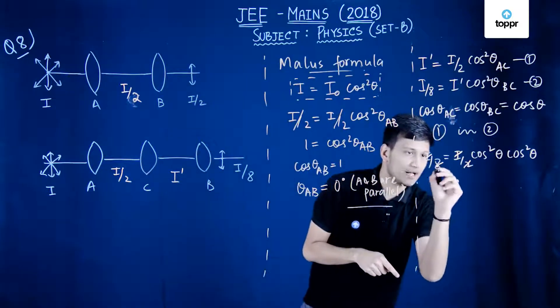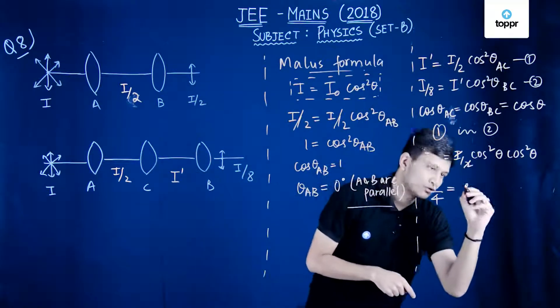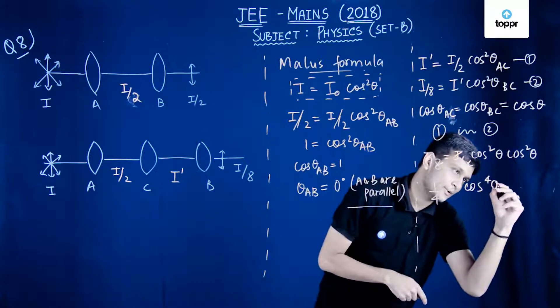So this gets cancelled out. This becomes 1 by 4 equals cos raised to power 4 theta. Simple equation, simple maths.